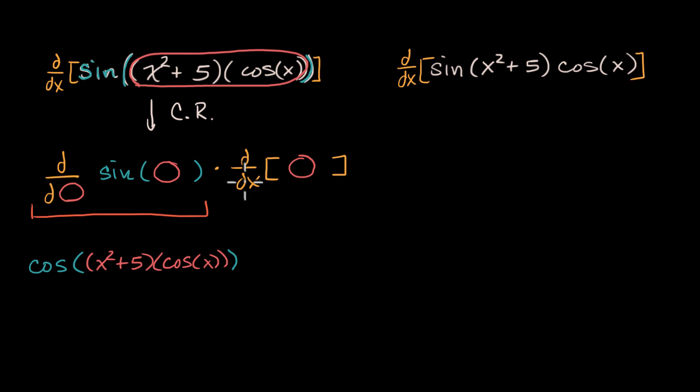Let me close the cosine right over there. And then times the derivative with respect to x of all of this again. Of x squared plus five times cosine of x. And then I would close my brackets.